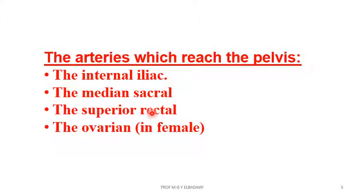The superior rectal is the continuation of the inferior mesenteric artery. This artery starts at the brim of the pelvis, descends on the side of the rectum, and divides into two branches on each side of its back. It is responsible for the supply of the mucosa of the rectum and the upper part of the anal canal, being the artery of the hindgut, and the hindgut's endodermal part develops the mucous membrane.